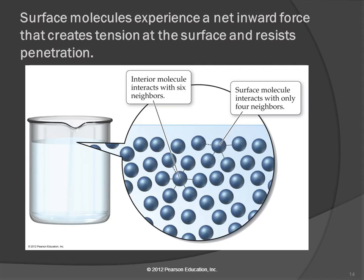Have you ever had pudding left uncovered in the refrigerator? It kind of forms a skin on it, and you can peel it off — underneath, the rest of the pudding is fine. There's kind of a layer like that. The surface molecules are a little bit like a Red Rover line.